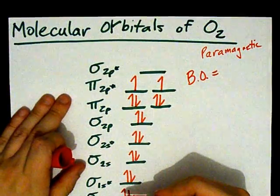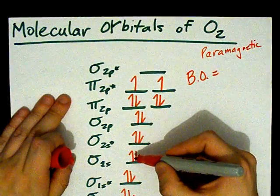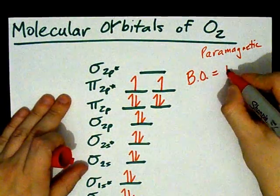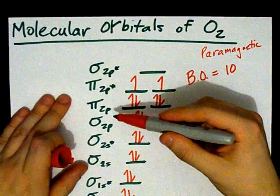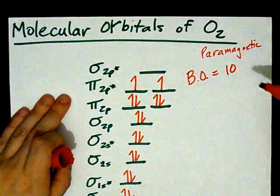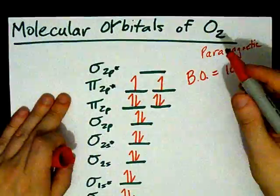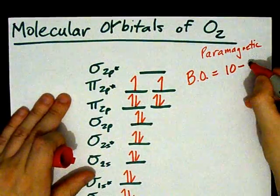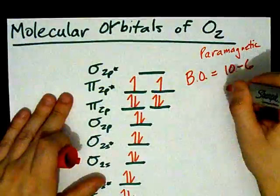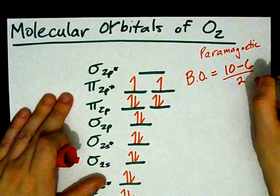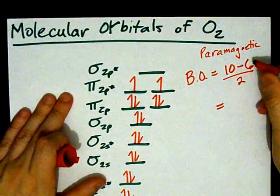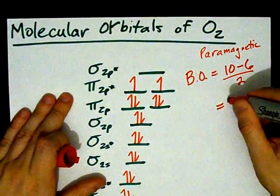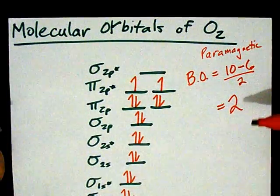The bond order is the number of electrons in bonding orbitals minus the number of electrons in antibonding orbitals. In bonding orbitals, 1, 2, 3, 4, 5, 6, 7, 8, 9, 10. I'm looking at all the ones that don't have a star on it. And subtract the number in antibonding orbitals: 1, 2, 3, 4, 5, 6. Yeah! And then you have to divide that difference by 2. So, 10 minus 6 gives 4, and then 4 divided by 2 is 2. So, my bond order here is 2.